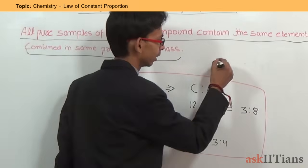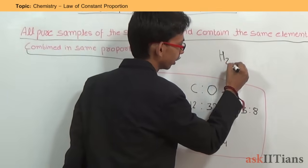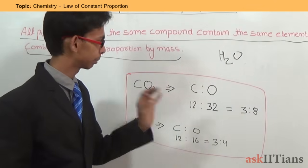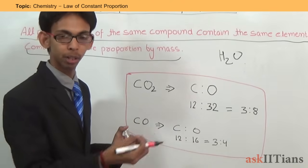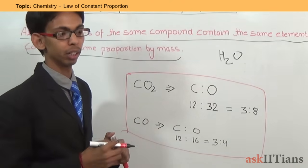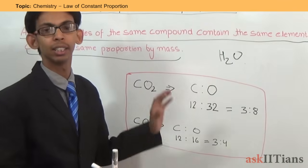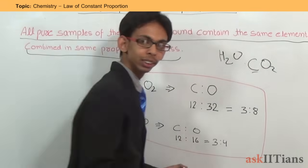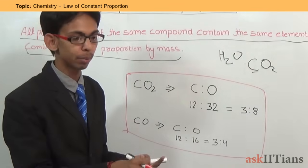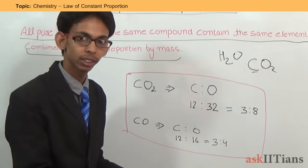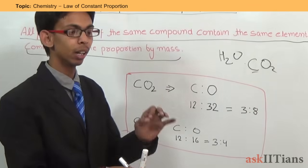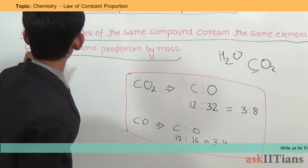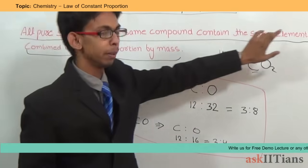What is the meaning of this line? If we are talking about water, it will always contain hydrogen and oxygen irrespective of the source. Whether we obtain water from the ground, from rain, or we synthesize it in the laboratory, it will always contain hydrogen and oxygen. Similarly, carbon dioxide will always contain carbon and oxygen. Glucose will always contain carbon, hydrogen, and oxygen. Sulfur dioxide will always contain sulfur and oxygen. That means a particular compound always contains particular elements.